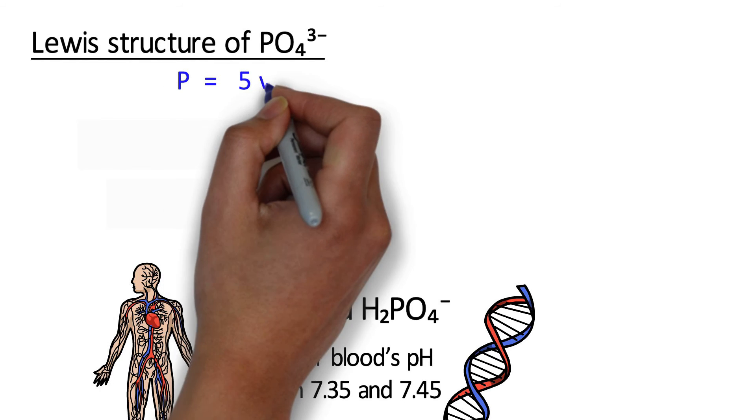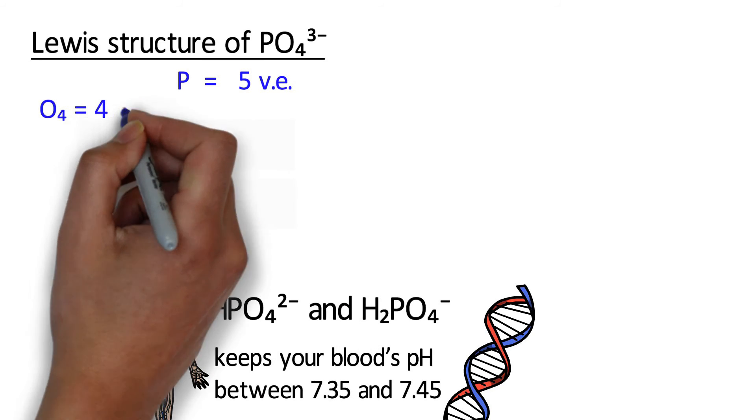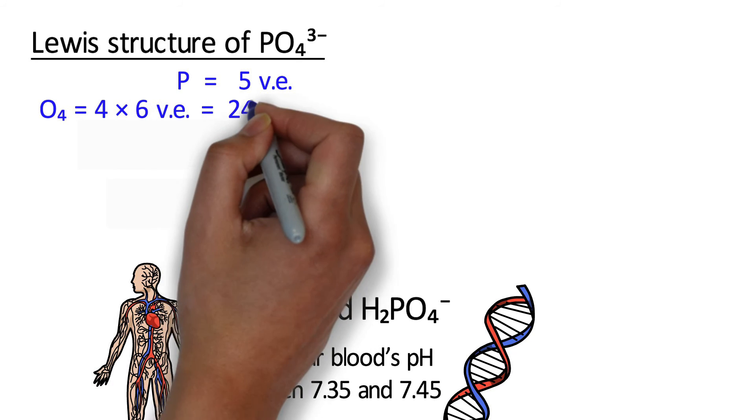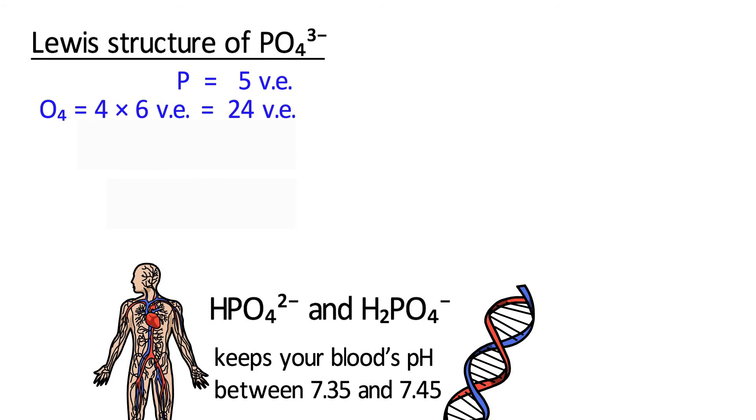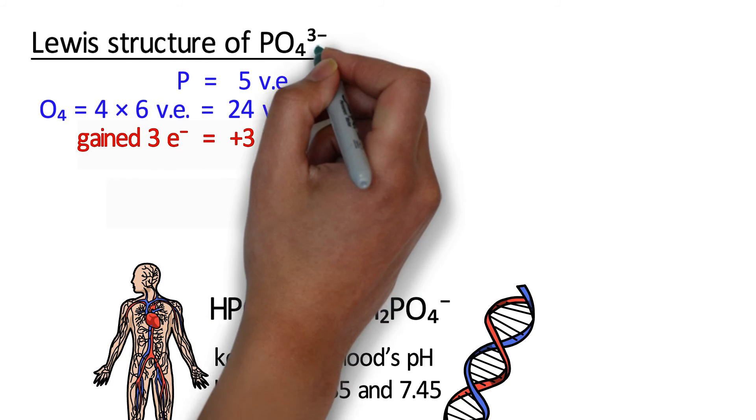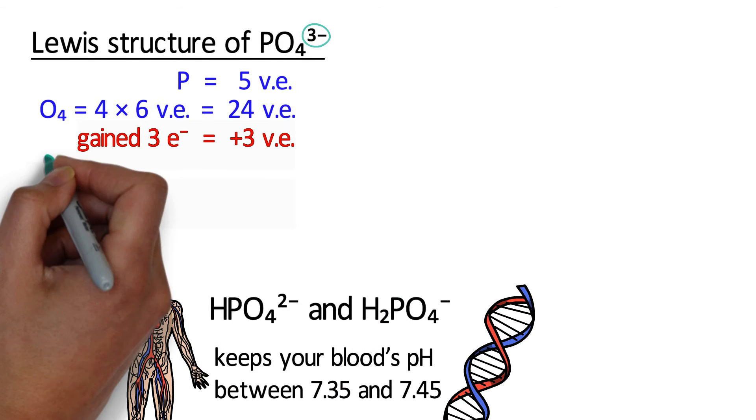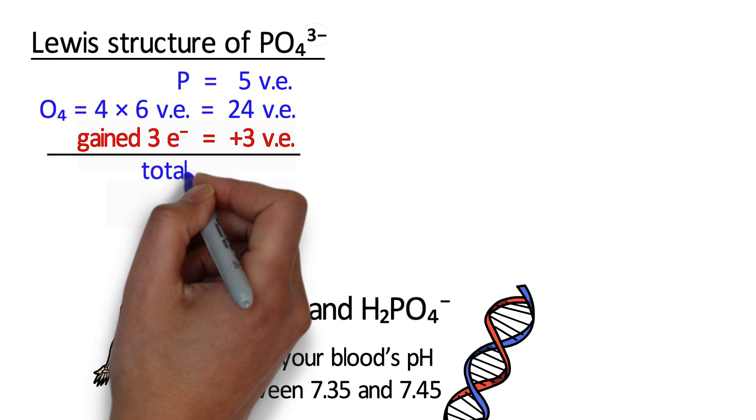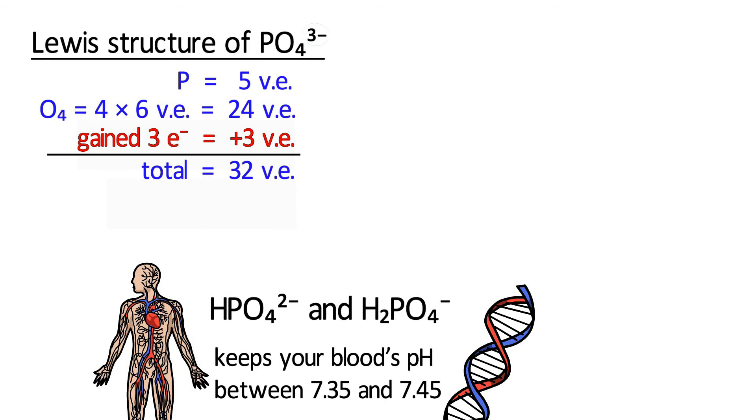Please pause the video and try to calculate the number of valence electrons in phosphate. The phosphorus has 5 valence electrons and each oxygen has 6, meaning there are 24 valence electrons from the oxygens. Plus, we need to add an additional 3 valence electrons from the negative 3 charge. This adds up to 32 valence electrons.